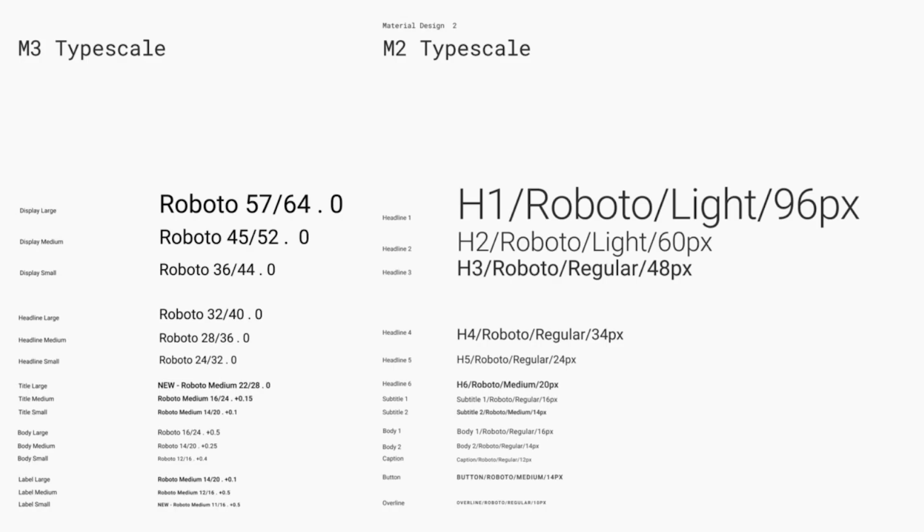If you compare the scaling of typography in Material Design 2 with Material Design 3, the scaling becomes more consistent across different groups. The third key feature of Material Design 3 is Elevation. In Material Design 2, we had elevations for elevated components and an increase in elevation resulted in a bigger shadow. But in Material Design 3, it introduces a new property called surface tint color.